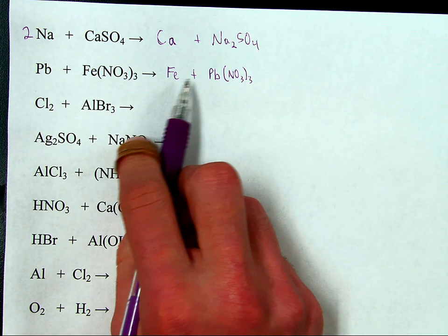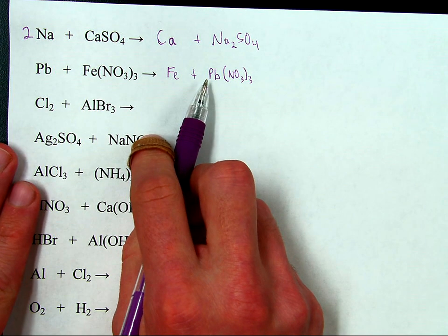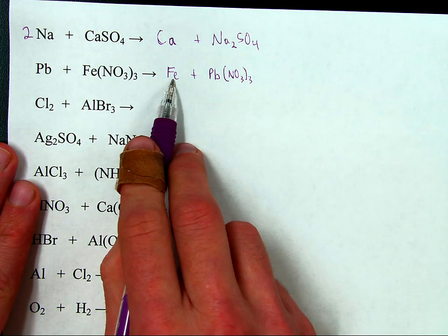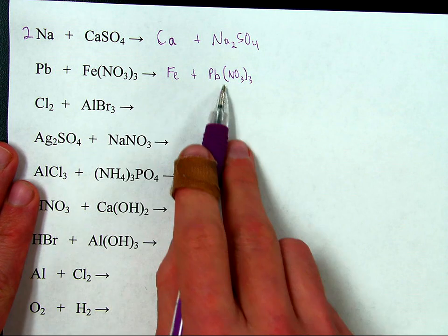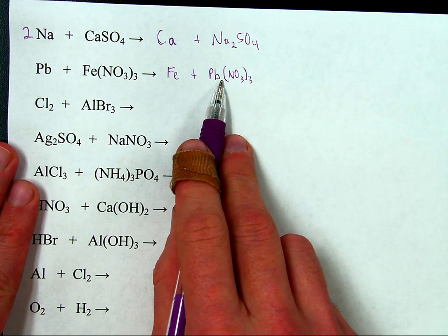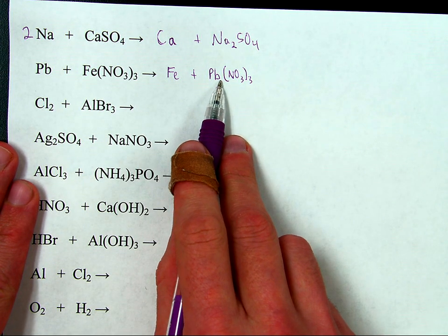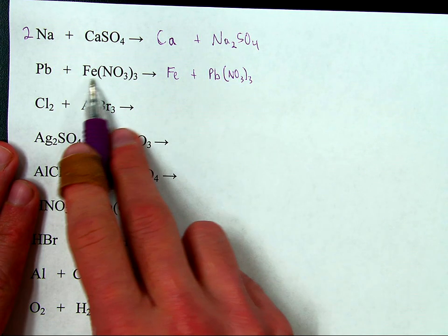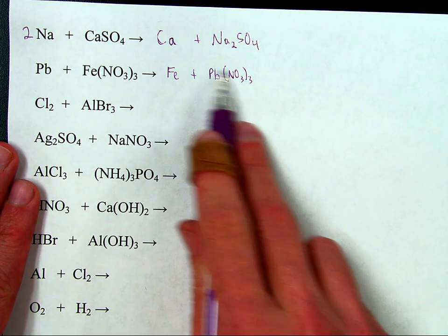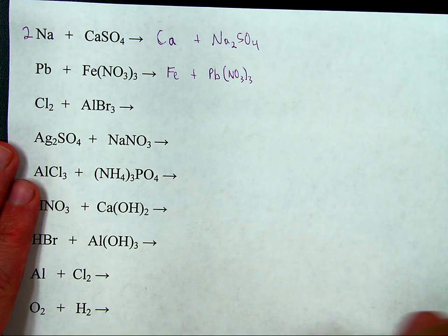Iron bonded with three nitrates because it had a three-plus charge. Lead is going to bond with three nitrates because it's going to have a three-plus charge. That's step one — I have switched the pieces. Step two: let's make sure the formula is correct. Step three: does any balancing need to be done? One iron, one iron. One lead, one lead. Three nitrate, three nitrate. We're done.